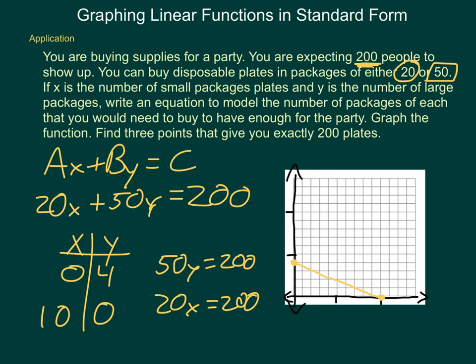For instance, I know I can buy 0 and 4. I can buy 10 and 0. But then, looking at my graph, I see that right here, at 5, 2, I have another combination of plates that would work. So 5, 2 becomes a possibility.